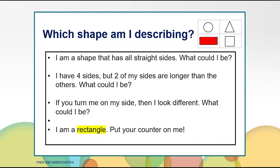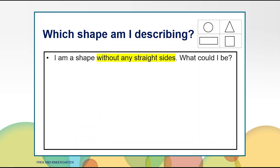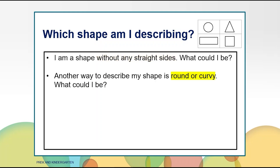Let's try to guess another shape. Here is the first clue: I am a shape without any straight sides. What could I be? Put your counter on the shape you think I am talking about. Here is the second clue for the same shape. Listen carefully. I am a shape without any straight sides. Another way to describe my shape is round and curvy. What could I be? Put your counter on the shape you think I am talking about.